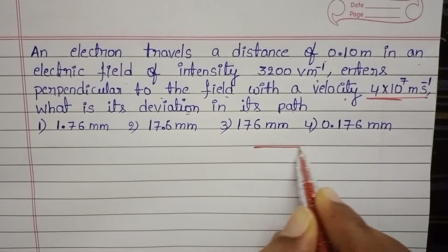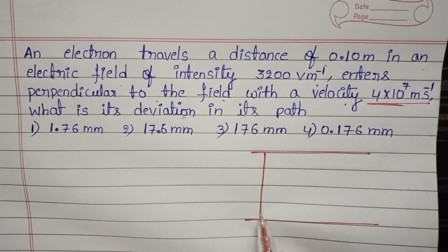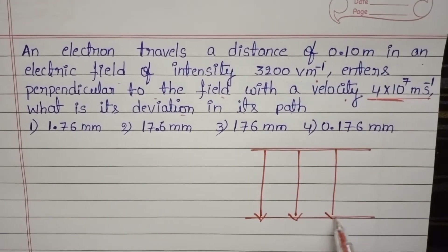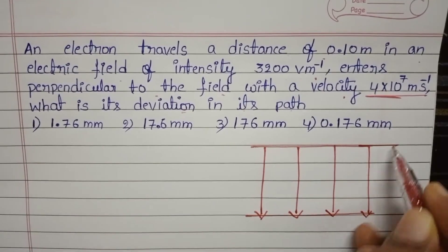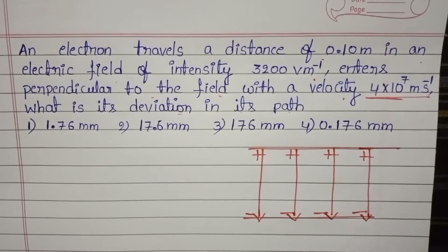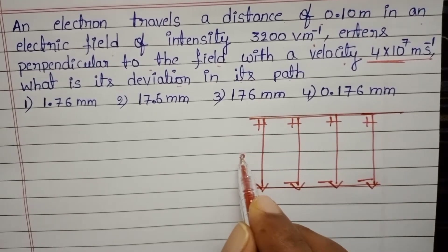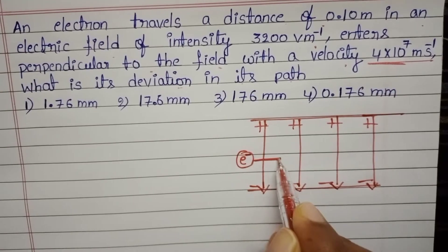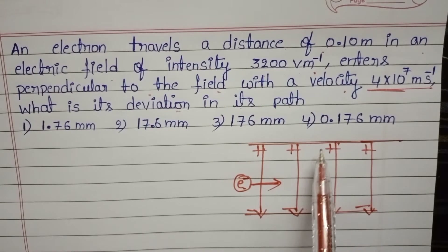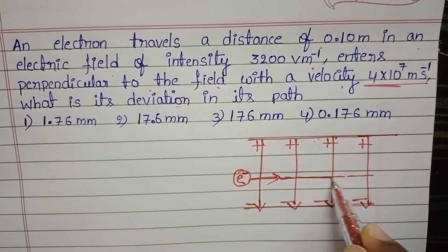The electron enters into a uniform electric field with a certain velocity. Consider a uniform electric field with positive charge on one side and negative charge on the other, with electric field lines from positive to negative. Since the electron is a negative charge, it is attracted towards the positive charge and deviates from its path.